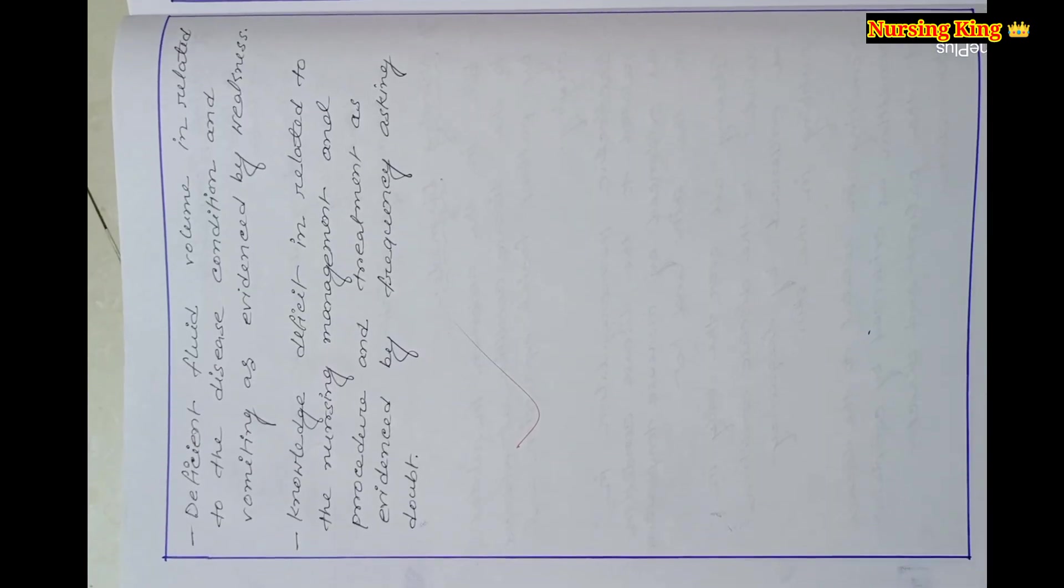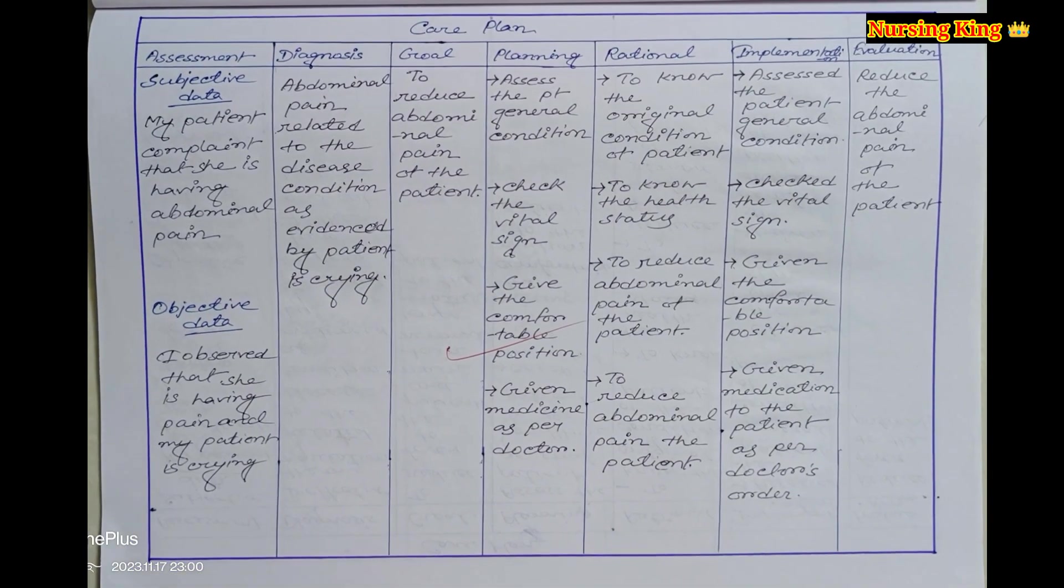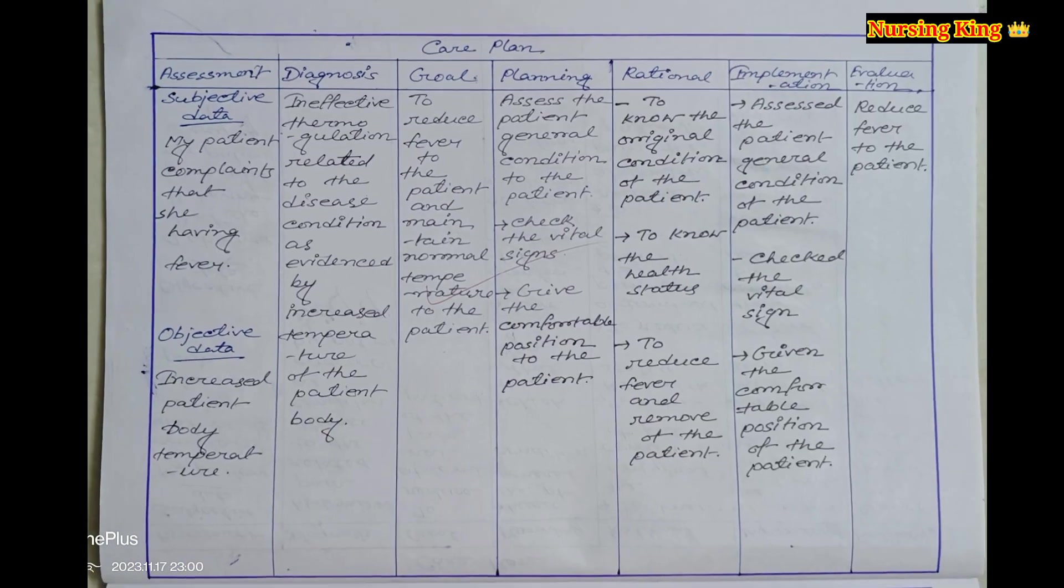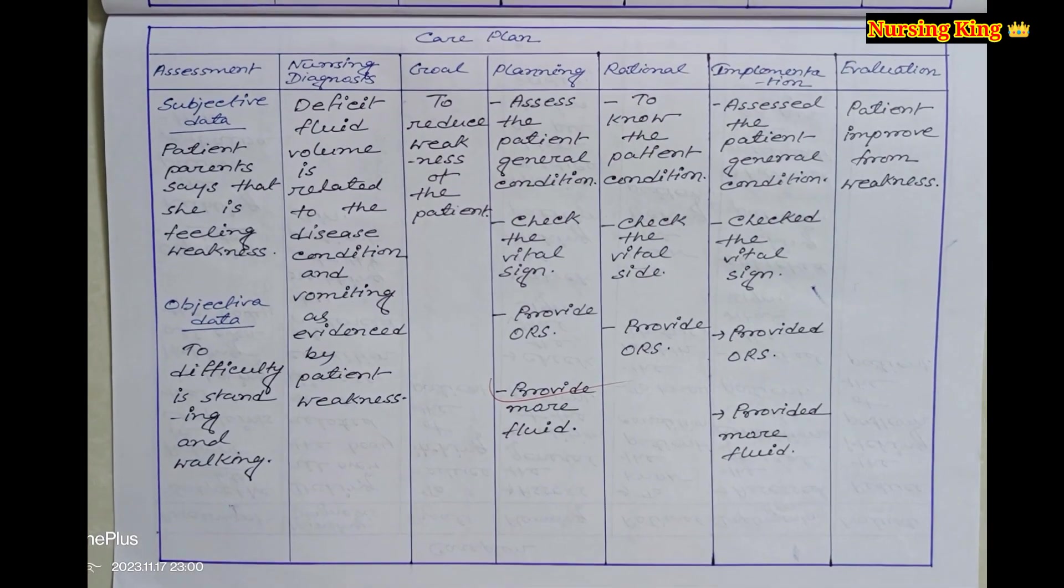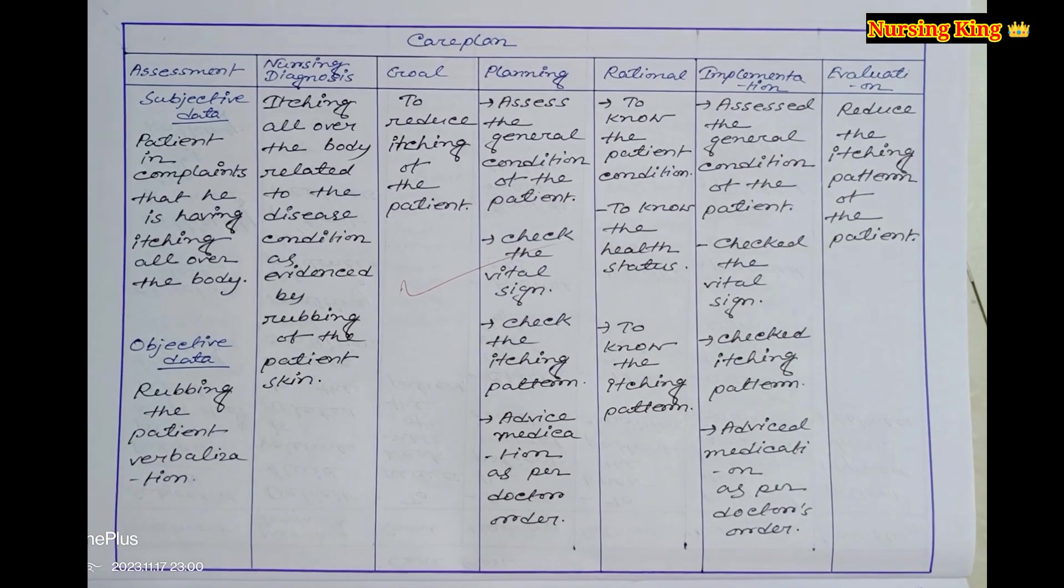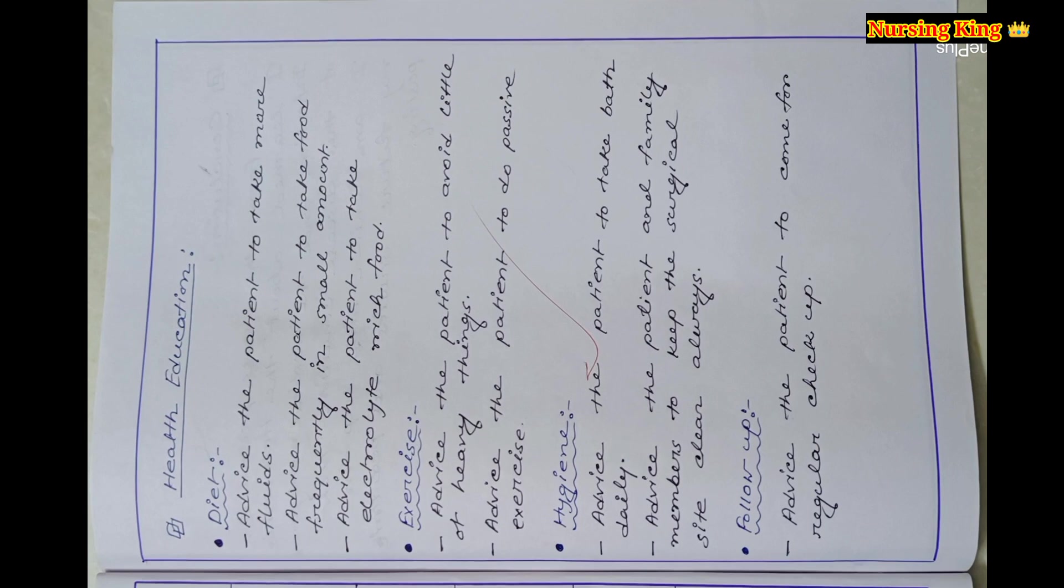Based on the nursing diagnosis, you have to mention the nursing care plan. In the nursing care plan, the six components you have to mention: assessment, diagnosis, goal, planning, implementation, and evaluation. You essentially have to mention these.